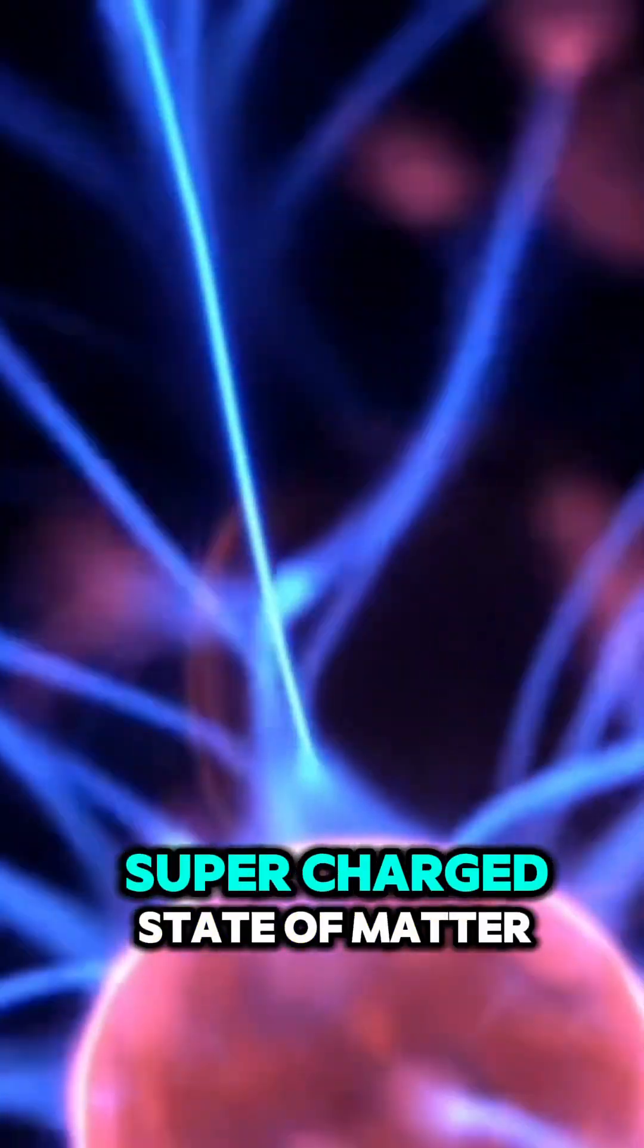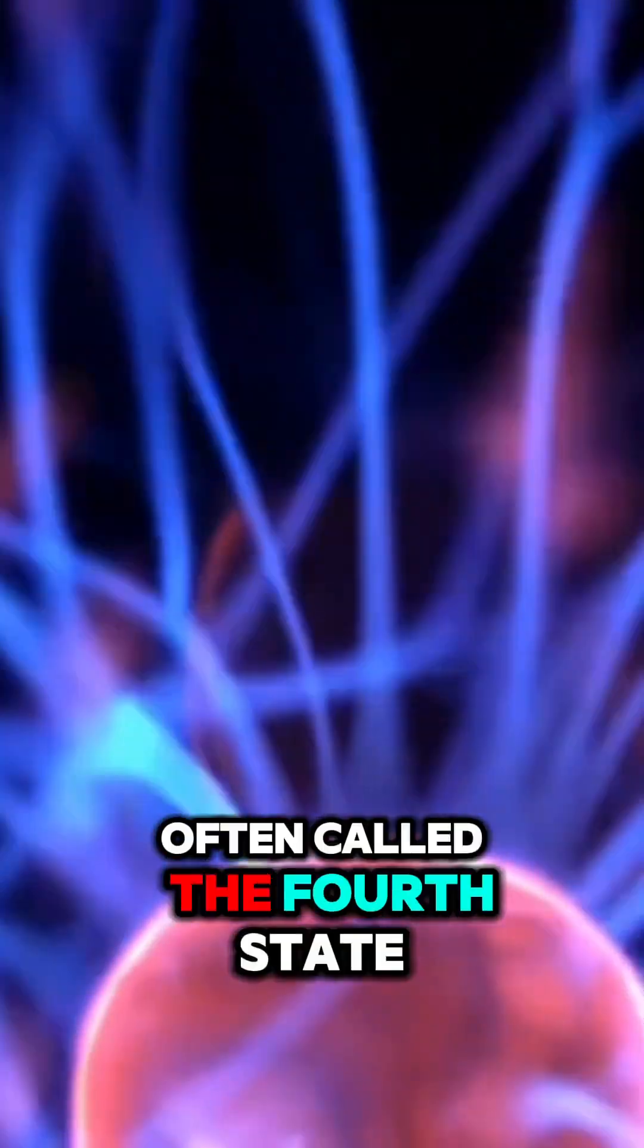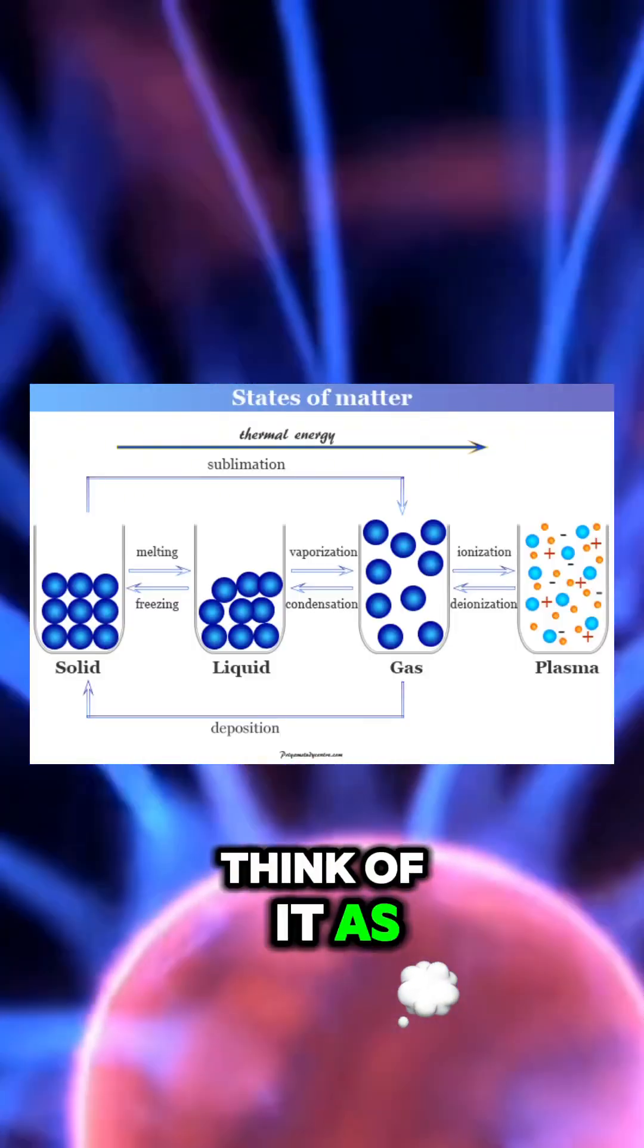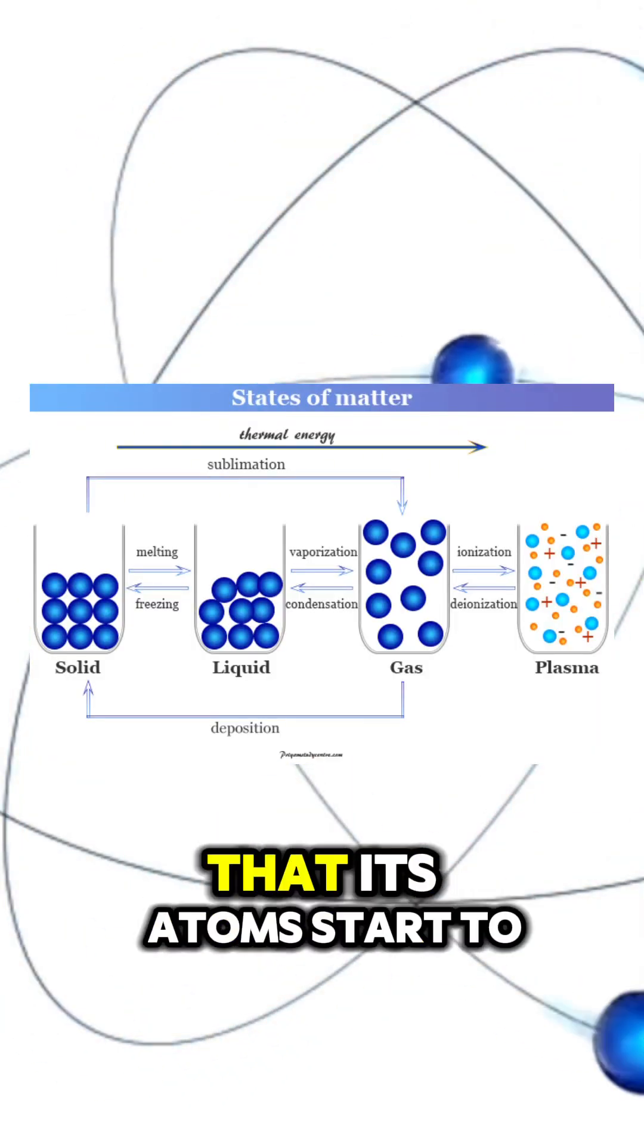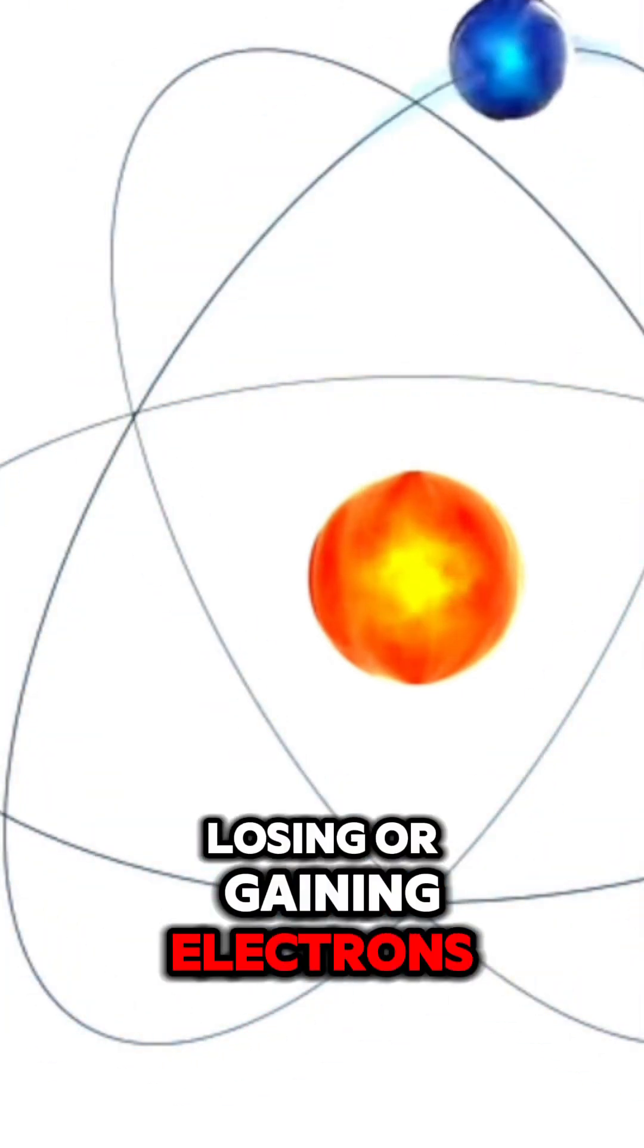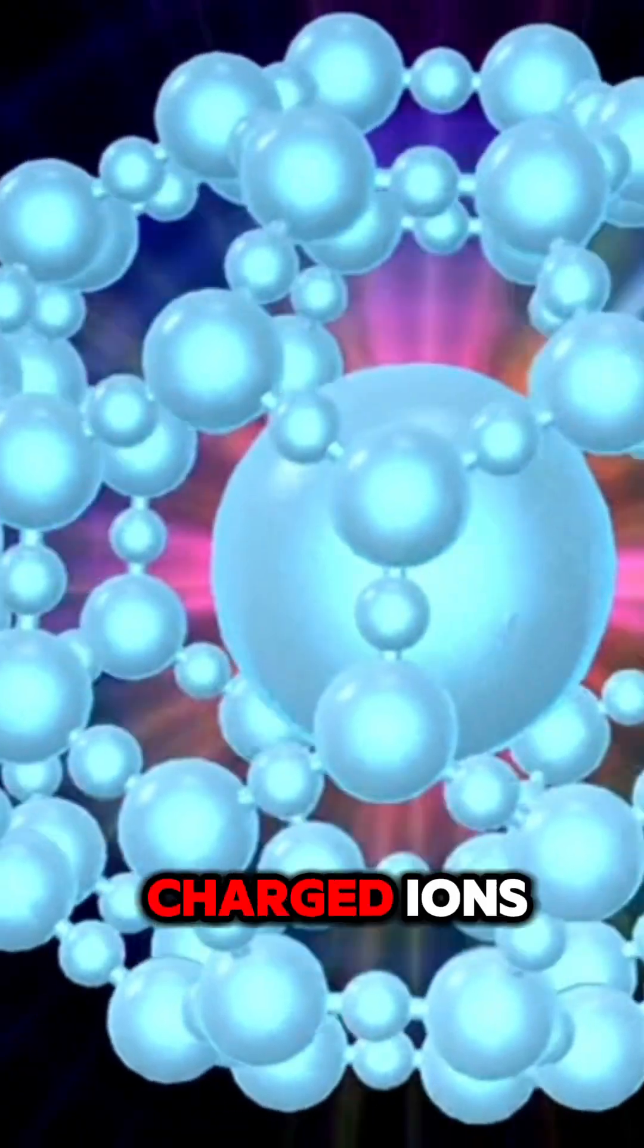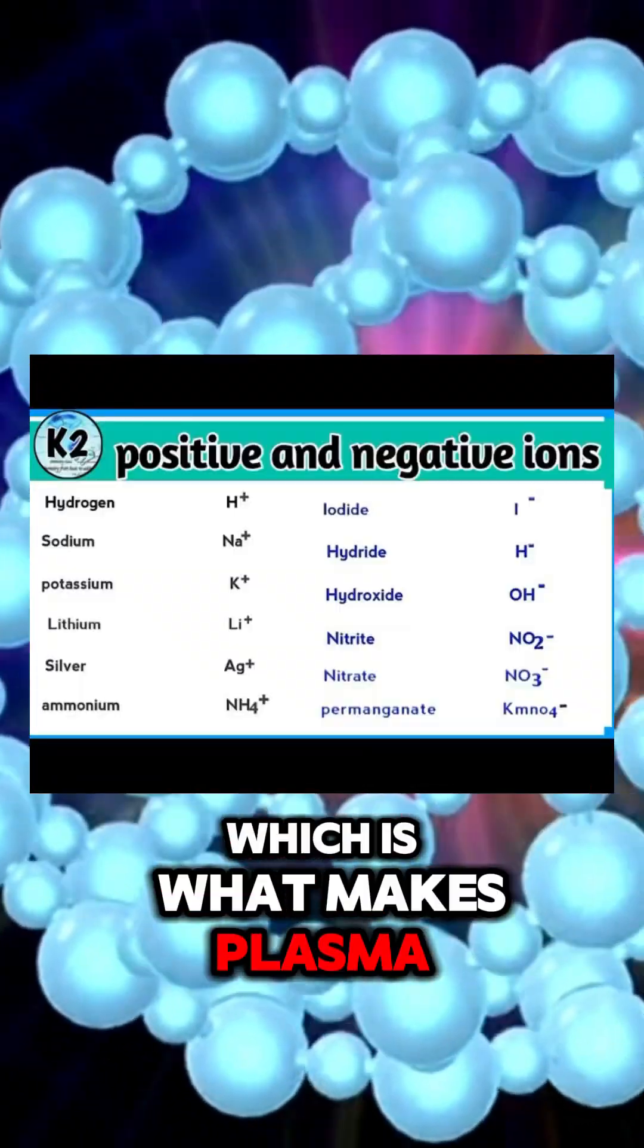Plasma is basically a supercharged state of matter, often called the fourth state, after solids, liquids, and gases. Think of it as a gas that's been given so much energy that its atoms start to break apart, losing or gaining electrons. This creates a mix of free-floating electrons and positively charged ions, which is what makes plasma so unique.